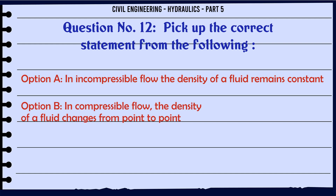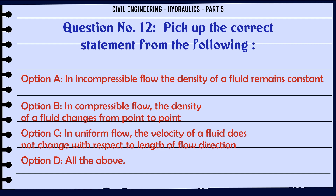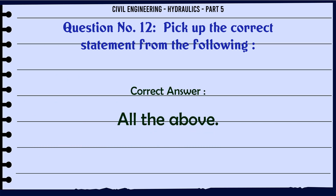Pick up the correct statement from the following: A. in incompressible flow the density of a fluid remains constant, B. in compressible flow the density of a fluid changes from point to point, C. in uniform flow the velocity of a fluid does not change with respect to length of flow direction, D. all the above. The correct answer is all the above.